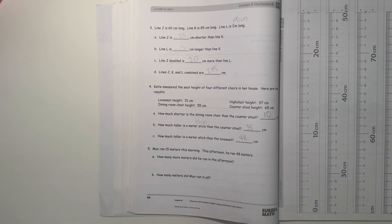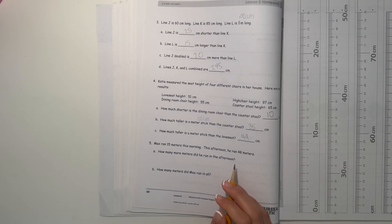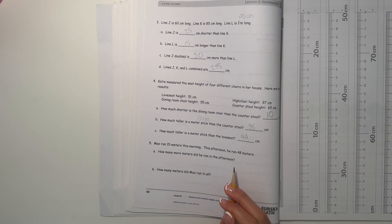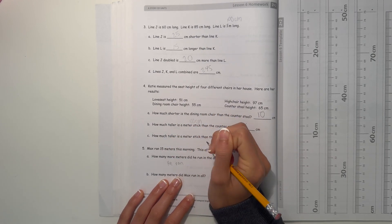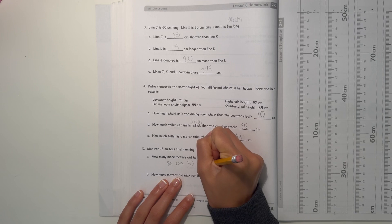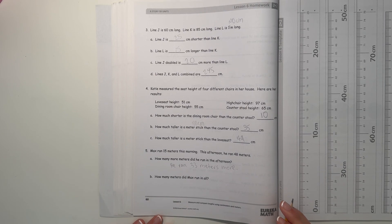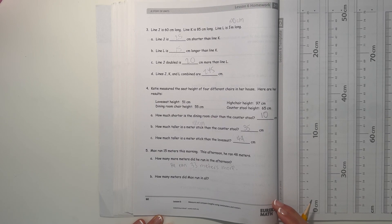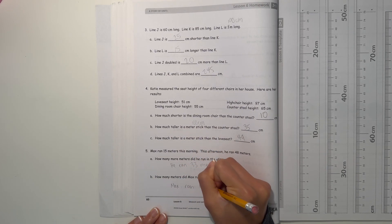Number 5. Max ran 15 meters this morning. This afternoon, he ran 48 meters. How many more meters did he run in the afternoon? So 48 minus 15, that is 33. So then he ran 33 meters more. Now this is how many meters did Max run in all? So 15 plus 48, that's 63. So then Max ran 63 meters.